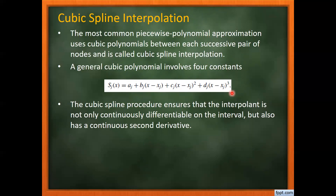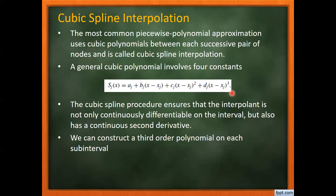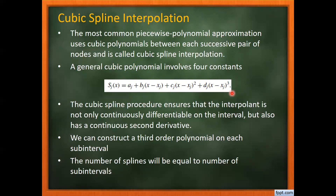The cubic spline ensures that the interpolant is not only continuously differentiable on the interval, but also has a continuous second derivative. We assume that at the point where two polynomials are joined together, their derivatives are also equal to ensure the smoothness condition. So we construct a third-order polynomial on each subinterval satisfying the smoothness conditions.